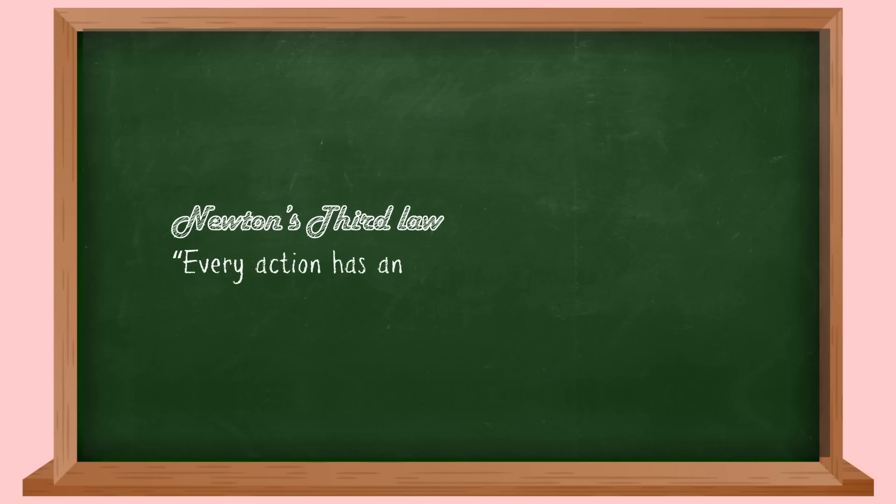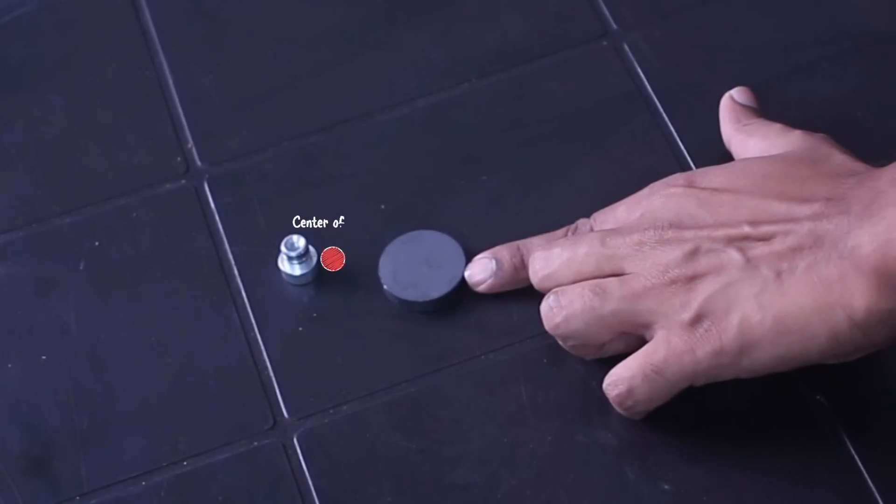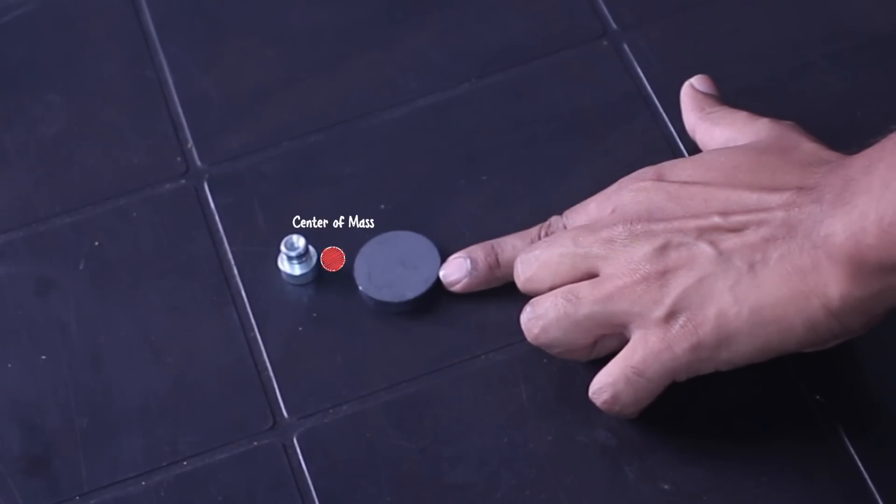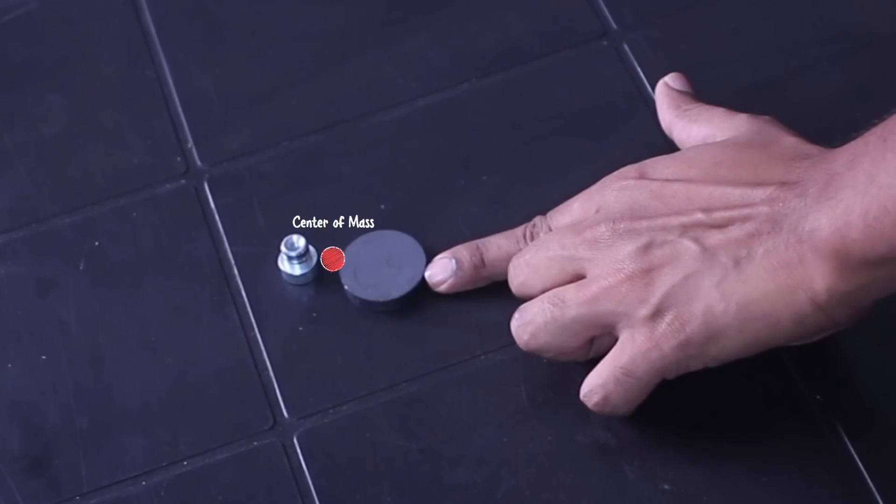And that is Newton's third law: every action has an equal and opposite reaction. And you can see why they're equal and opposite, because the same force moves the heavier object less in one direction and the lighter object more in the other direction.